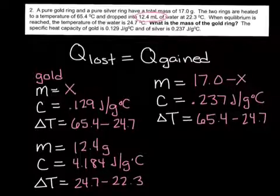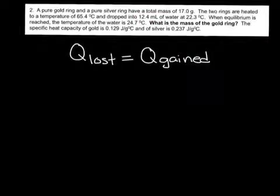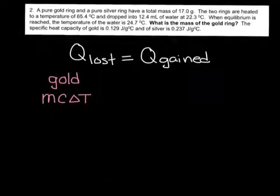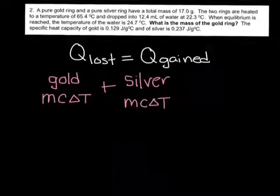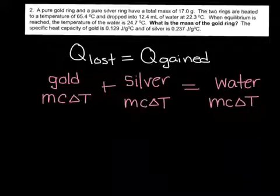Now that we have all of this information, we can take those variables and plug it into our equation. We know that the gold is heated up and will lose energy, so we're going to put that on the left side of our equation. The silver is also heated up and loses energy to the water once it's placed in the water, so it will also be on the left side. That's going to be equal to the energy gained by the water. We're now going to plug in the mcΔT for gold, the mcΔT for silver, the mcΔT for water, and then solve for x which will be the mass of our gold.